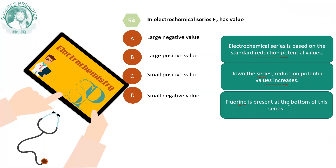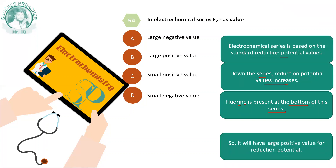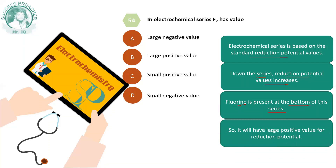For fluorine, because it is present at the bottom of the series, it has the largest positive reduction potential value. Since fluorine is at the bottom of the series, and lower down the series the positive values increase, fluorine has the largest positive reduction potential value.